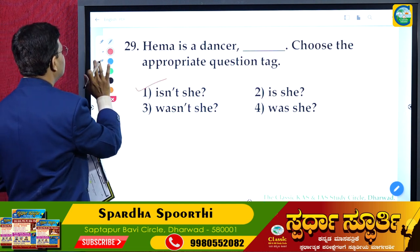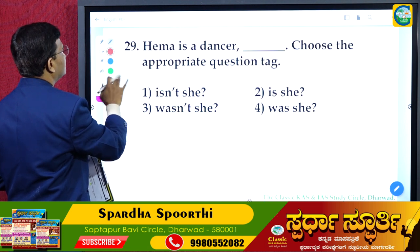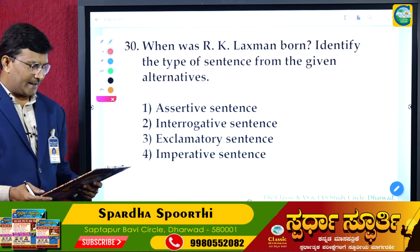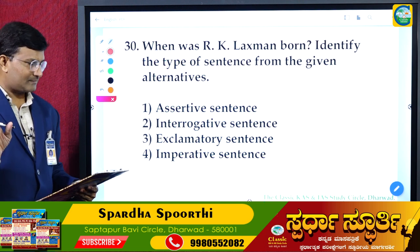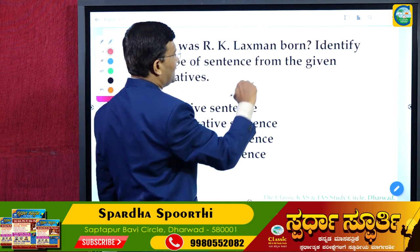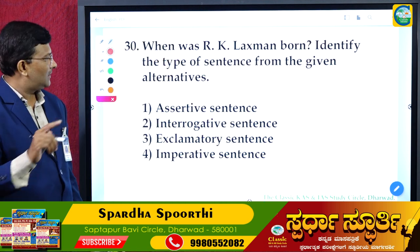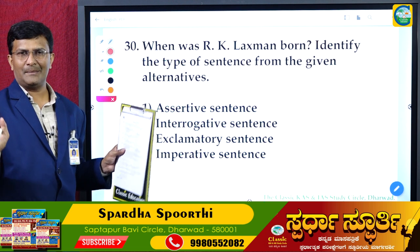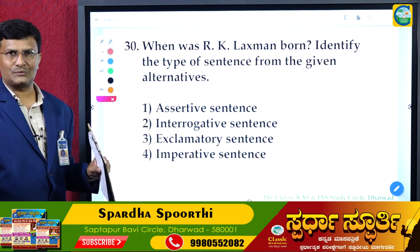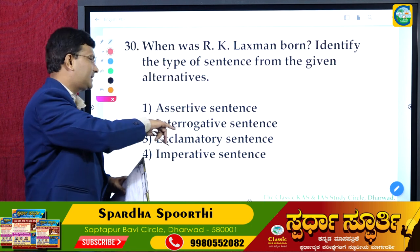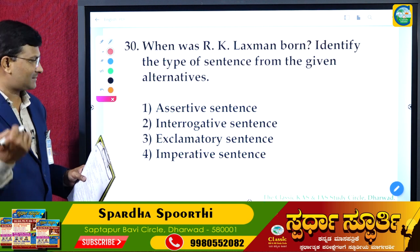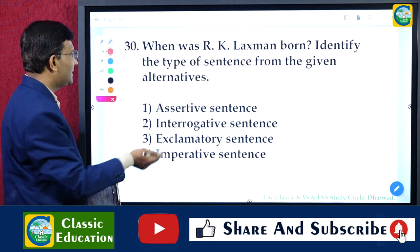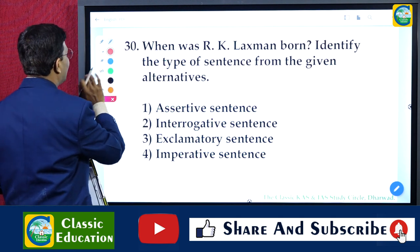Question 30: 'When was R.K. Laxman born?' — identify the type of sentence. Assertive means a simple statement: 'I am a boy.' Interrogative means a question. Exclamatory means expressing sudden feelings. Imperative means a command or request. Since there is a question mark, the answer is interrogative sentence.